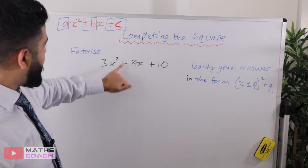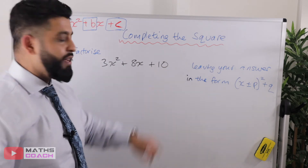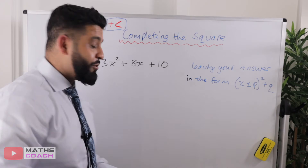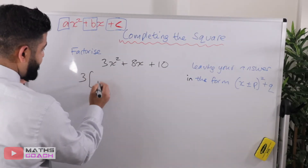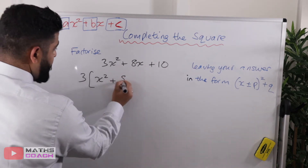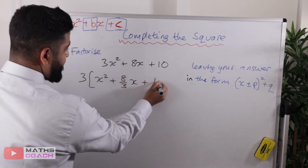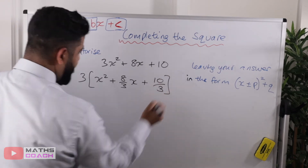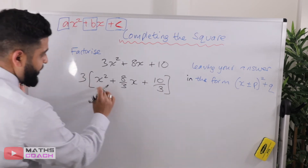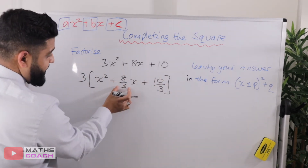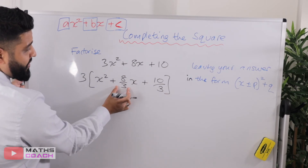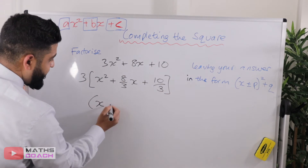Last one of this type: 3x squared plus 8x plus 10. Once again, try it yourself at home and press play when you're ready. So take out that 3: you have x squared plus 8 over 3 times x plus 10 over 3. Next, we're going to ignore that 3 and just focus on what's inside the square bracket. This time, notice that the b coefficient already has a fraction.